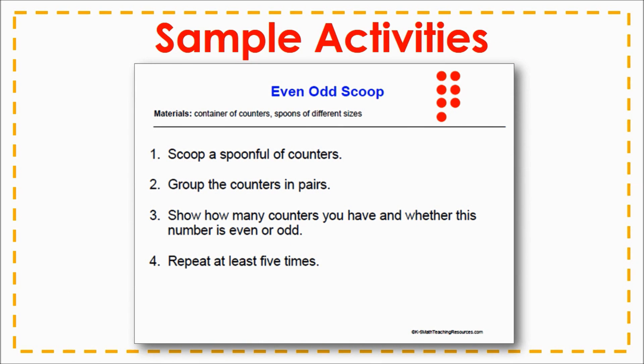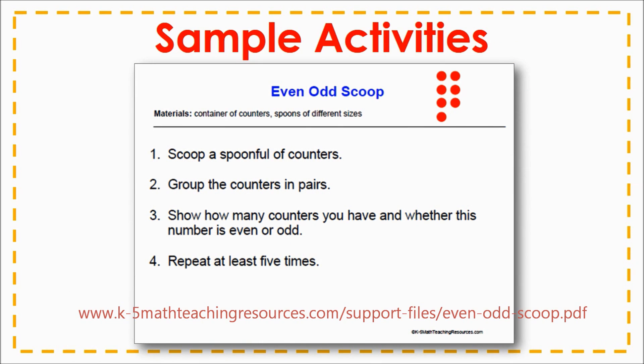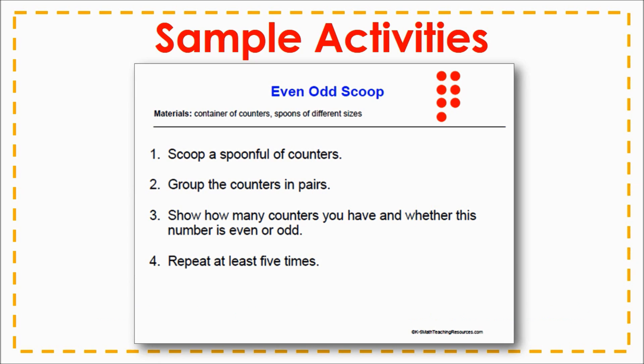The Even/Odd Scoop activity can be completed throughout the work as an independent station. Students will use different sized spoons to scoop counters out of a container and then pair them to determine if the number of counters they scooped represents an odd or an even number. It is recommended that students record their findings in a journal to keep track of patterns and to add accountability to this task.